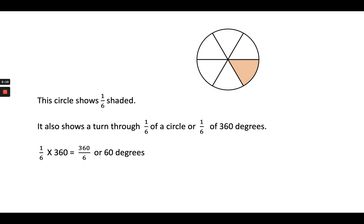So when we multiply one-sixth by 360, we get 60 degrees. So in this particular circle, this angle measure is 60 degrees.